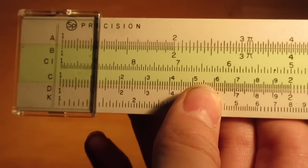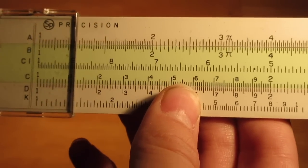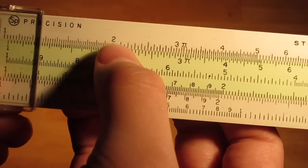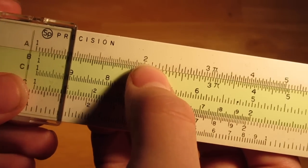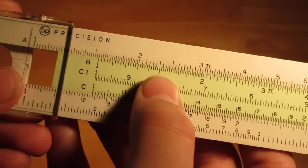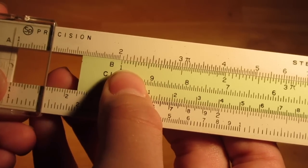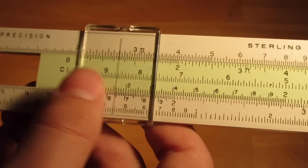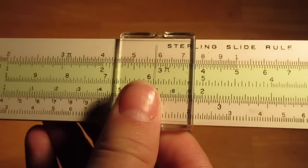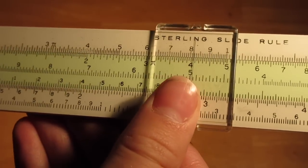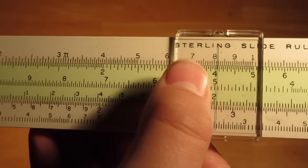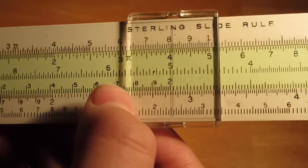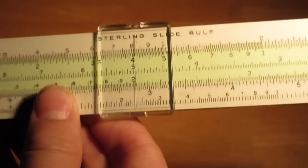Let's start with something simple and multiply two times four. We're going to find two on A. We're going to slide one on B right under where two is. Then we're going to use our hairpin to find where four is on B, and it is there. Right above four, you can see that is eight. So that tells us that four times two is eight, as we already know.